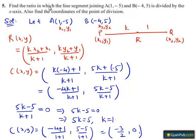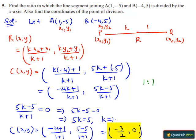Therefore, the ratio in which the line segment joining A(1, -5) and B(-4, 5) is divided by the x-axis is 1:1, and the coordinates of the point of division are (-3/2, 0).